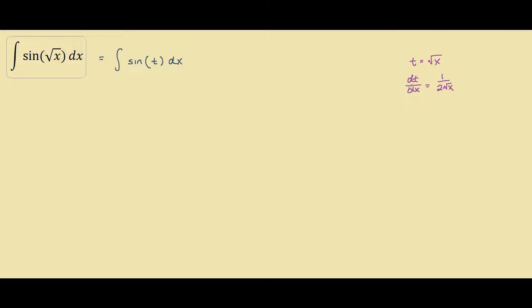So we rearrange our equation over here, and we have dx equals 2 times the square root of x, dt.